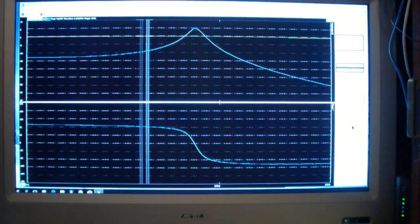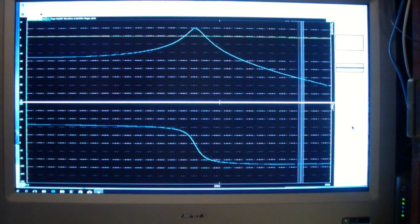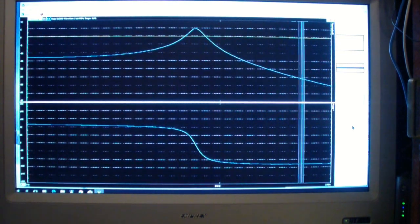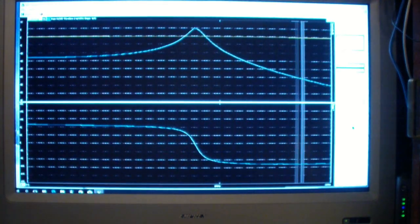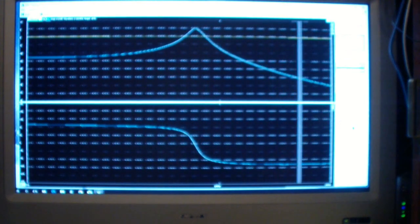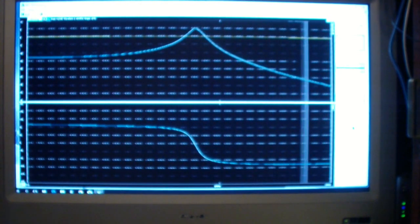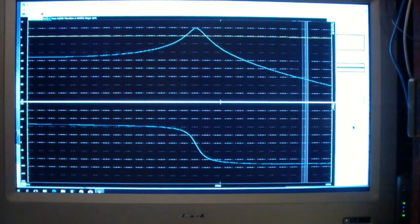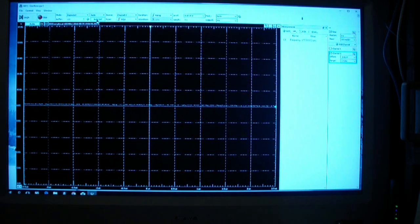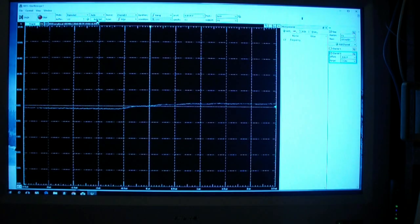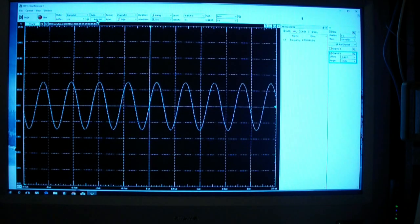Let's remove the input and connect the output of the feedback network to the input. Now I have the oscilloscope connected to the output of the oscillator. There's no feedback right now. Now I'm going to make the feedback connection. Now.